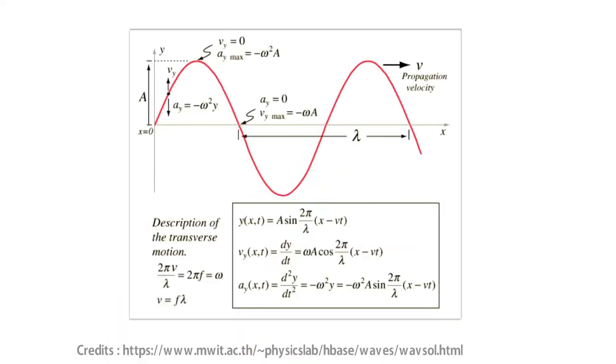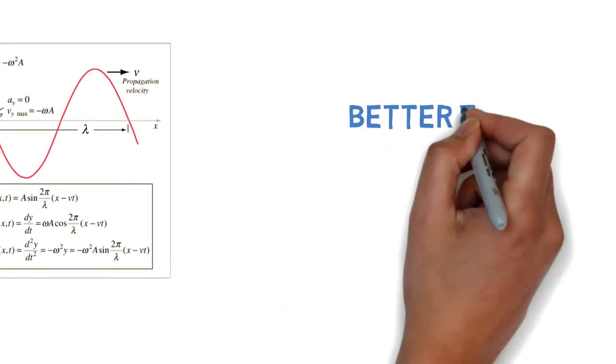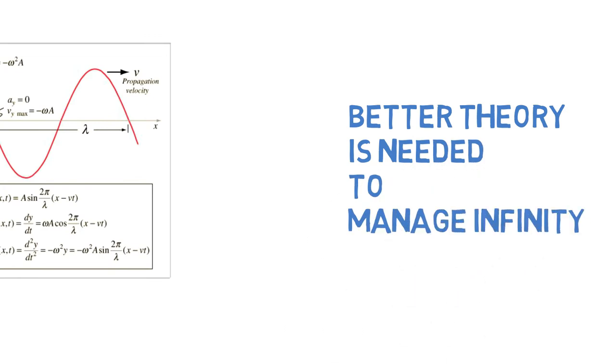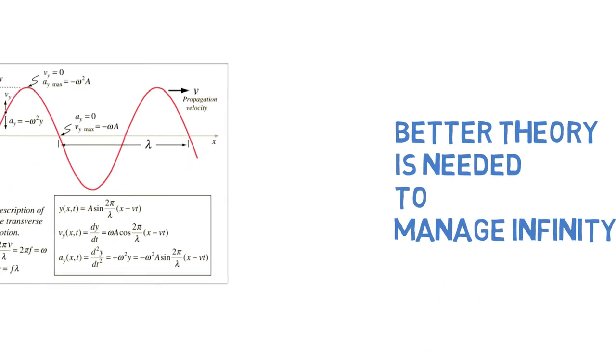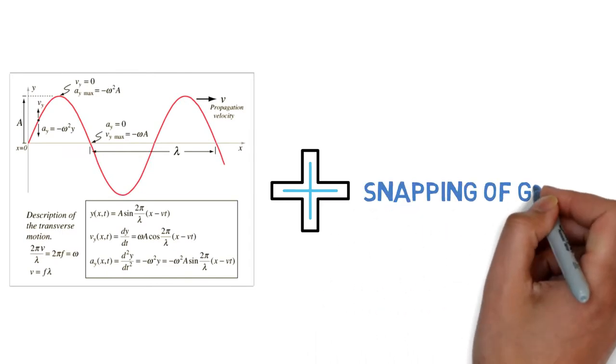The simple model of waves on a string is correct as long as the vibrations are small. To avoid the infinity in the equations, you need to build a better theory. For vibrating guitar strings, all you have to do is add to the model a description of when guitar strings snap.